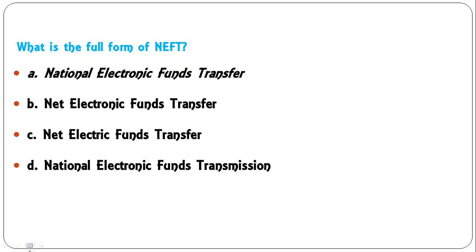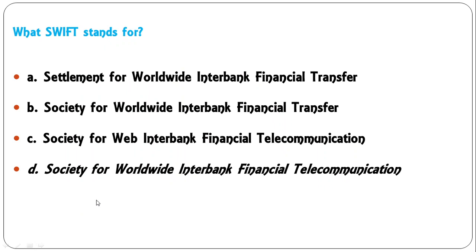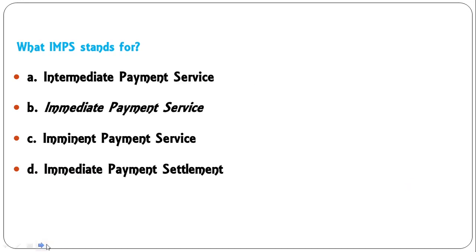What is the full form of NEFT? The options are: national electronic funds transfer, net electronic funds transfer, net electric funds transfer, national electronic funds transmission. The correct full form of NEFT is national electronic funds transfer — A is correct. What does SWIFT stand for? The options are: settlement for worldwide interbank financial transfer, society for worldwide interbank financial transfer, society for web interbank financial telecommunication, society for worldwide interbank financial telecommunication. The correct full form is the last one — D: society for worldwide interbank financial telecommunication.